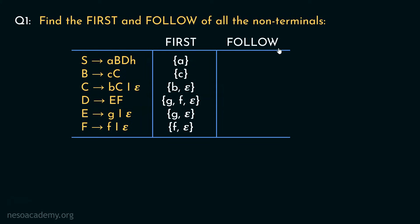Let's now figure out the Follows. Coming to the start symbol S — S appears in none of the right-hand sides of any productions. Therefore, in the Follow of S, we will only have the dollar symbol, which indicates the end of the input stream.